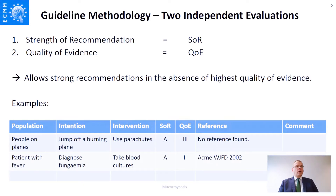Moving into guideline methodology: there are two independent evaluations. One is the Strength of Recommendation, the SOR, and the other is the Quality of Evidence, the QOE. We regard both as completely independent from each other.